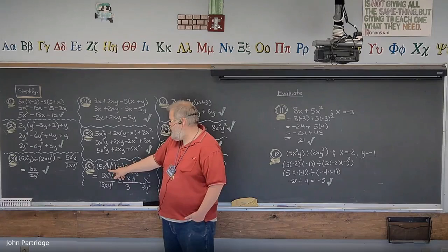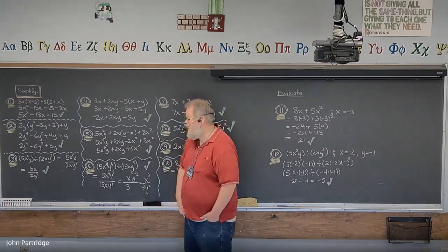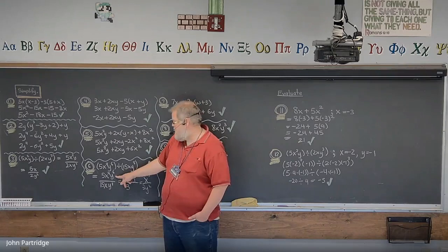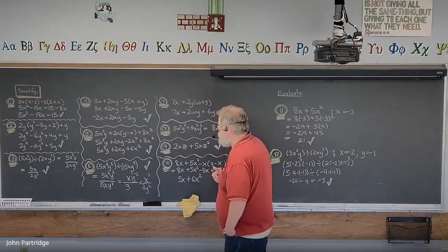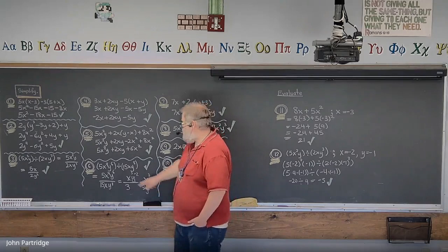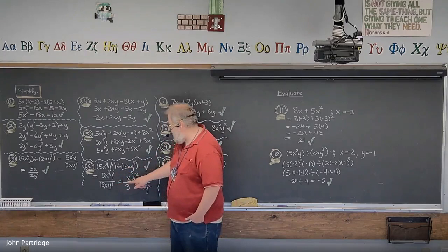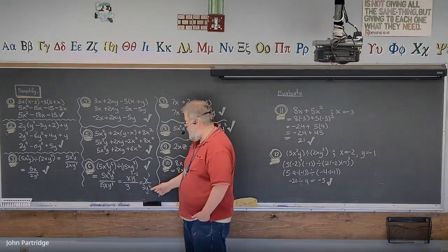Problem 6: 5x⁴y⁶ divided by 15xy⁸. Write it as a fraction: 5x⁴y⁶ over 15xy⁸. The coefficients 5/15 reduce to 1/3, so 3 goes in the denominator. For x: power 4 minus power 1 is x³ in the numerator. For y: power 6 minus power 8 is y⁻², which has a negative exponent and must reciprocate to the denominator. Final answer: x³ over 3y².